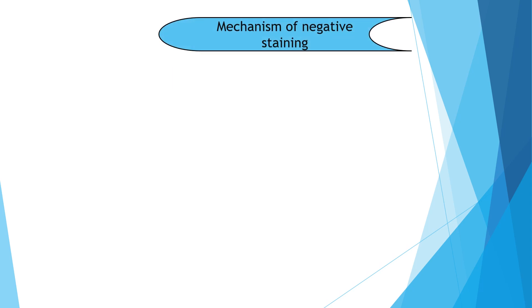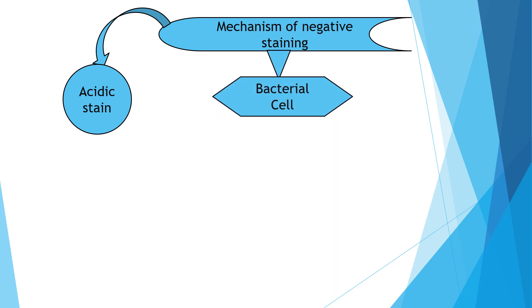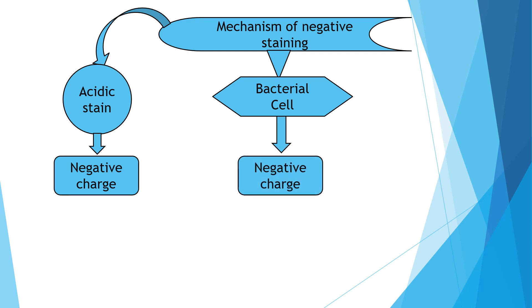Now let's see the mechanism of negative staining. In negative staining we use two things: an acidic stain and a bacterial cell culture. Both the acidic stain and the bacterial cell contain negative charges. The acidic stain contains a negative charge on its chromophore group, and the bacterial cell contains a negative charge on its surface.